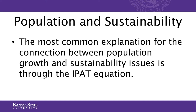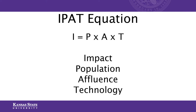Let's talk about the IPAT formula — hopefully this is review from your reading last week. In the IPAT equation, I stands for environmental impact, which is determined by P, A, and T. P stands for population, A stands for affluence, and T stands for technology.